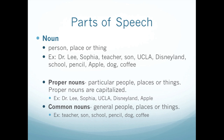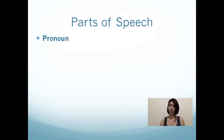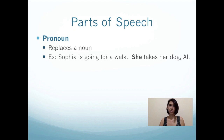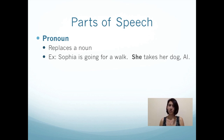So we have proper nouns and common nouns. The next part of speech is a pronoun. If you see pronoun, it has the word noun in it — this helps you remember it relates to a noun. A pronoun replaces a noun. For example, Sophia is going for a walk. She takes her dog out. Who is she? Yes, she is Sophia. So in the first sentence we said Sophia; in the second sentence we already know who you're talking about, so instead of saying Sophia, you can replace it with she. She is a pronoun.